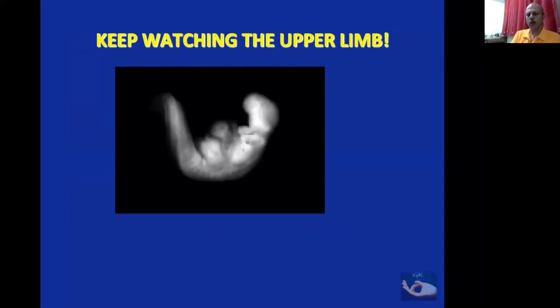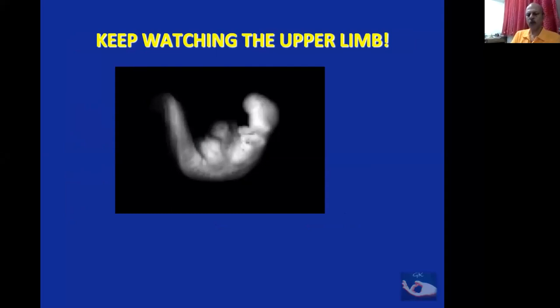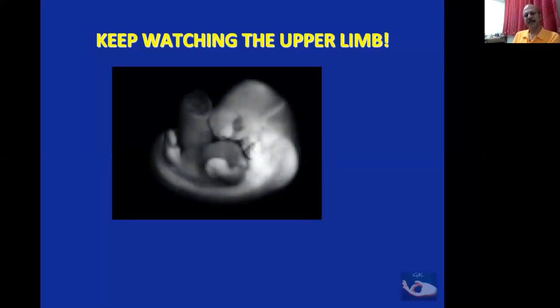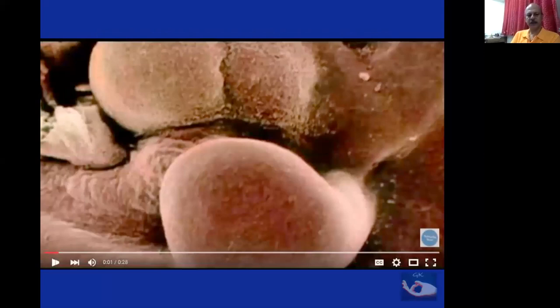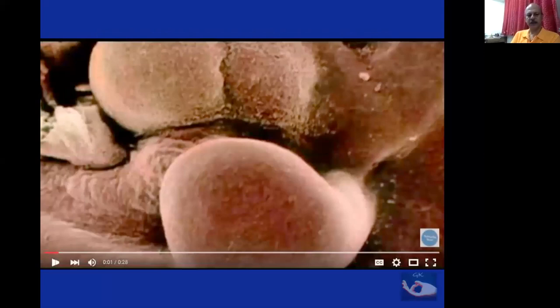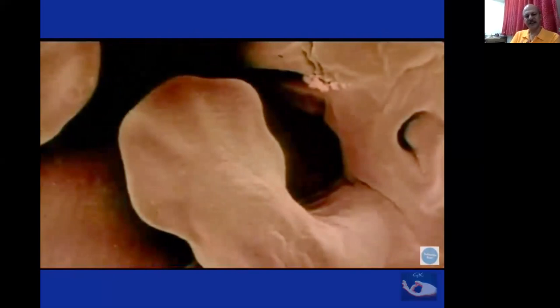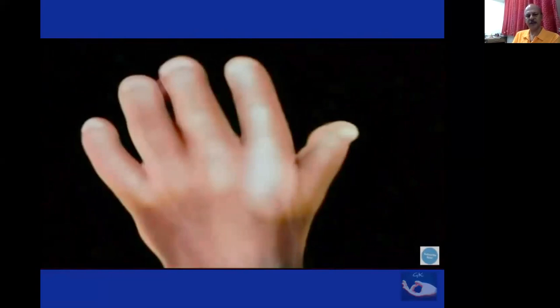We'll see the three-dimensional choreography — a beautiful choreography of developmental processes. Look at how the hand paddle has formed, then becomes wider. You can see the remnant of the fingers, and then the fingers are almost completely formed in this fetus. The hand paddle becomes flattened out, different rays form, and then the fingers start separating from distal to proximal. The hand is beautifully formed by the end of 45 to 50 days.